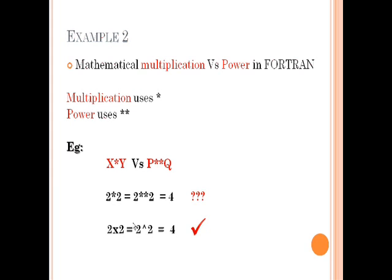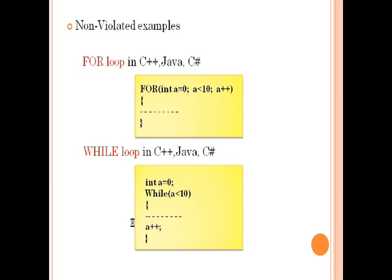Another good example that does not violate this principle is the for and while loops in Java and C++. Their functionality is different, so they use different names — 'while' and 'for'. Therefore, for and while do not violate this principle because things are not similar and they use different names. Some programming concepts violate the syntax consistency principle, but some concepts do not. If you do not violate these principles, the programmer or user can easily remember and read the code.